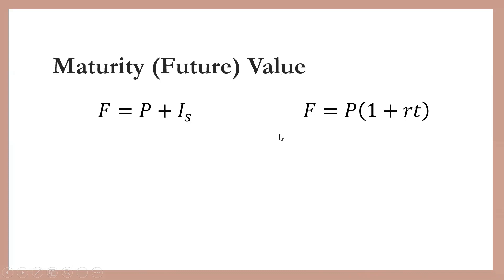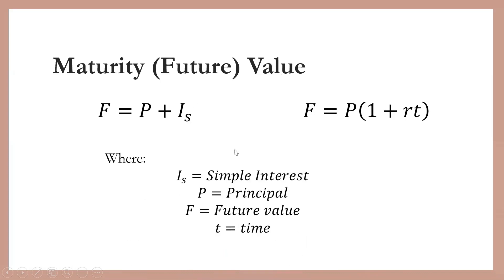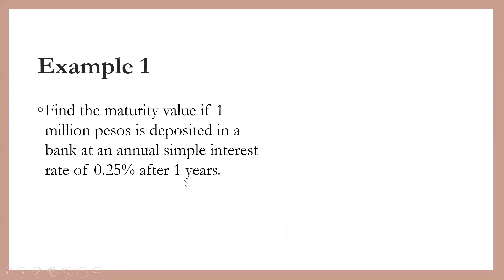Either of these two formulas can be used. Here, IS is the simple interest, P is the principal, F is the future value, and t is the time. For example number one: find the maturity value if 1 million pesos is deposited in a bank at an annual simple interest rate of 0.25% after one year.